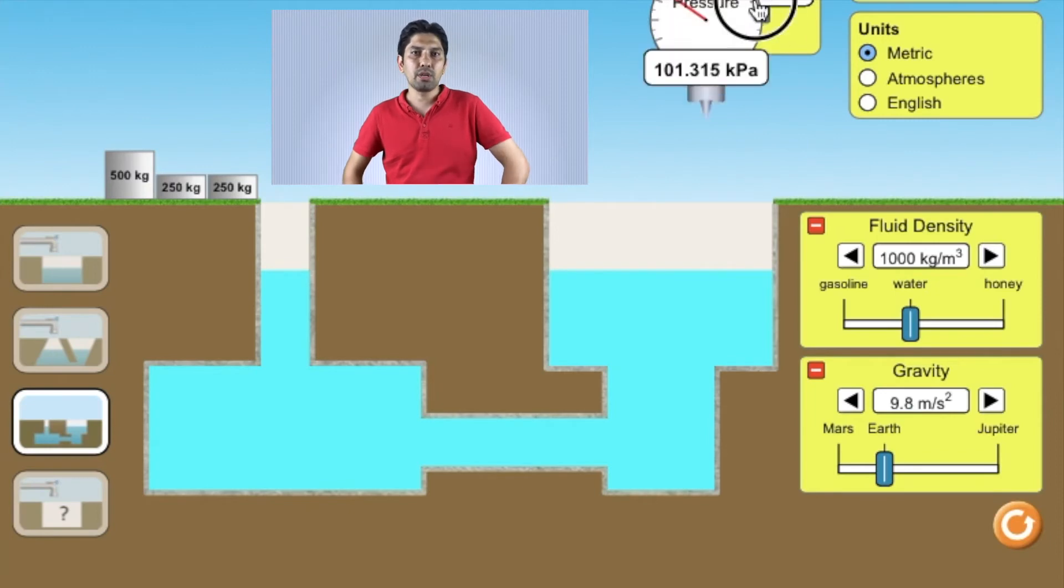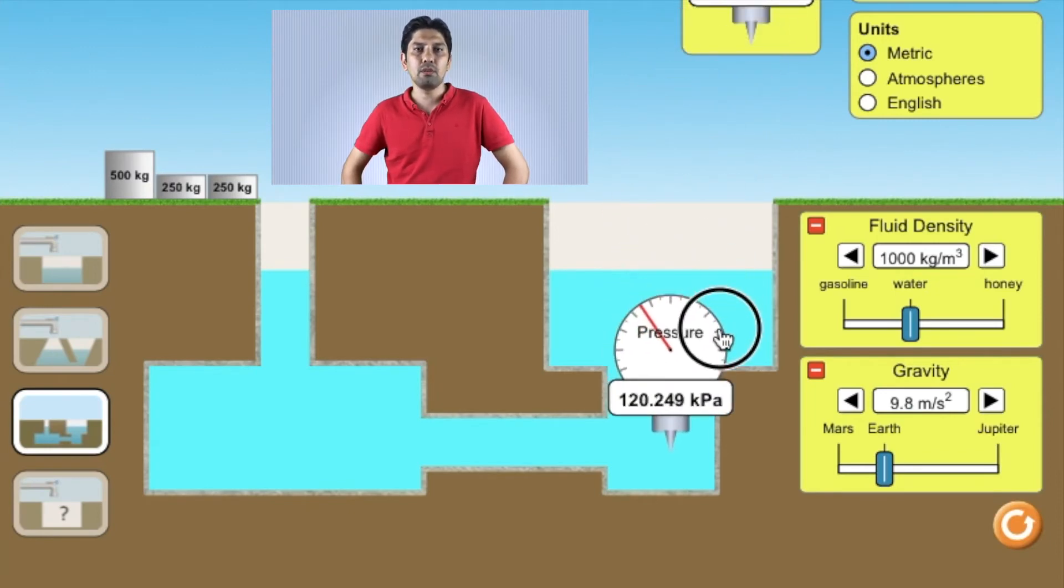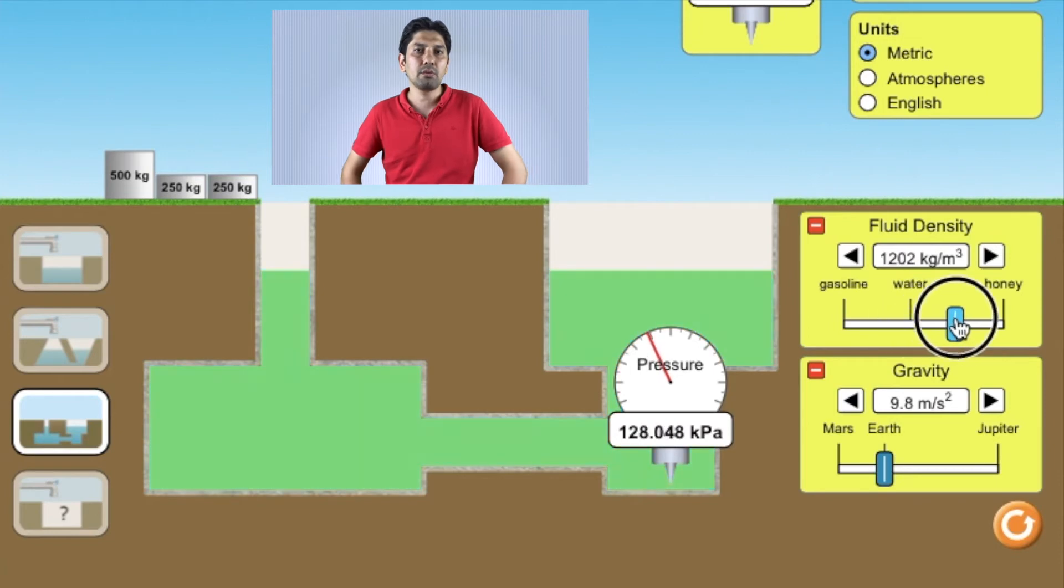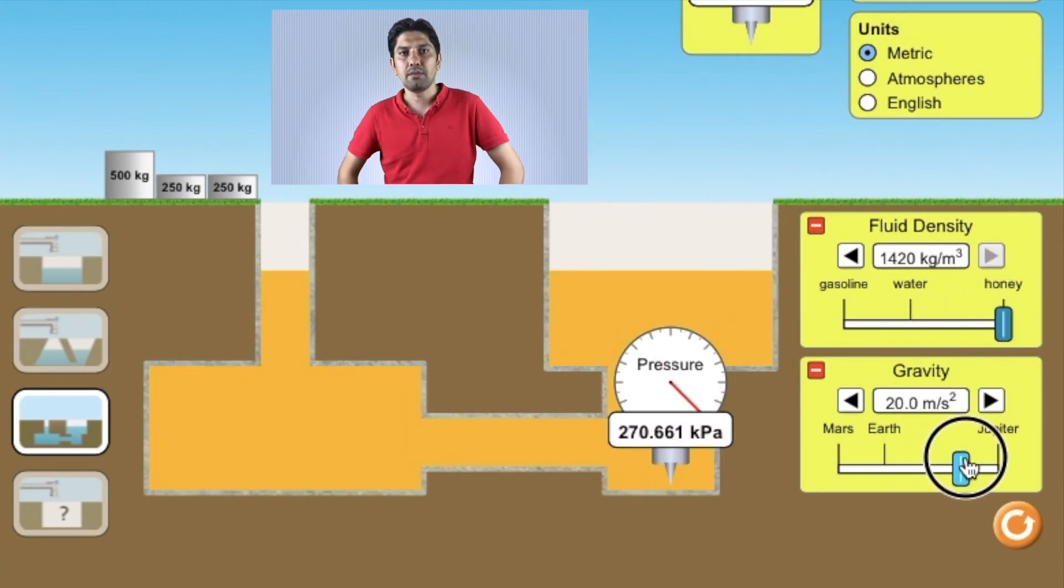When liquid applies force on an area, it's called liquid pressure. Liquid pressure depends on the density of the liquid, the gravitational acceleration, and the depth of the liquid.